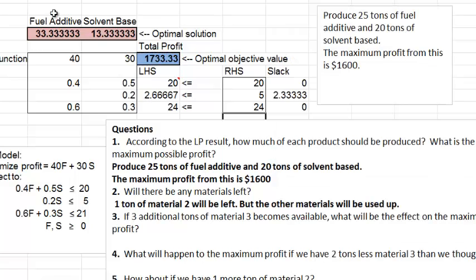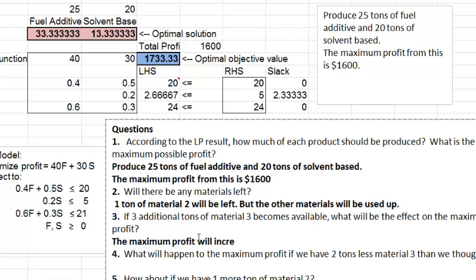Before the fuel additive here, the value was 25, and solver wheels was 20. And before the total profit was 1,600. So we're making more of fuel additive and less of solvent base. But anyway, the overall effect is that the total profit has increased from 1,600 to 1,733. So it has increased by about $133.33. Here, I will put down that the maximum profit will increase to $1,733.33 from $1,600.